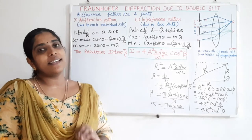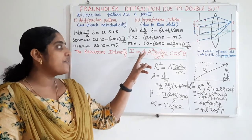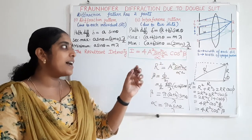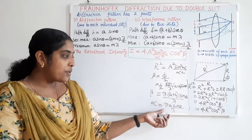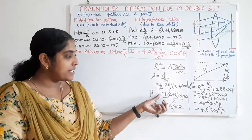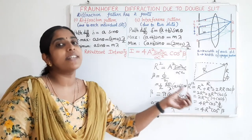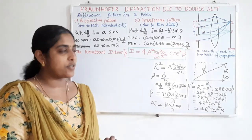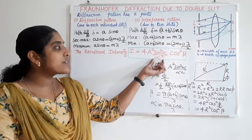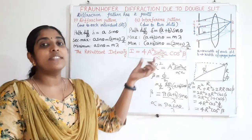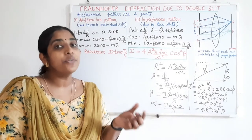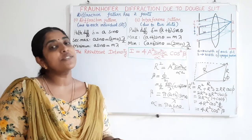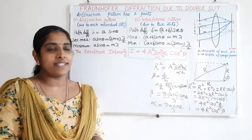So the final resultant intensity at point Q is I = 4A² sin²(alpha) / alpha² × cos²(beta), where alpha equals π A sin theta / lambda and beta equals π(A + B) sin theta / lambda. A is the slit width, B is the width of the opaque portion. The term A² sin²(alpha) / alpha² is due to diffraction at each individual slit, and cos²(beta) is due to the interference of wavelets from the double slits.